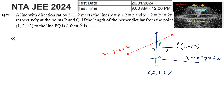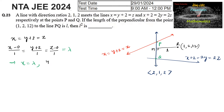The first line equation x = y+2 = z can be written as (x-0)/1 = (y+2)/1 = (z-0)/1. So the parametric form gives x = λ, y = λ-2, and z = λ. Any point P on the first line is (λ, λ-2, λ).